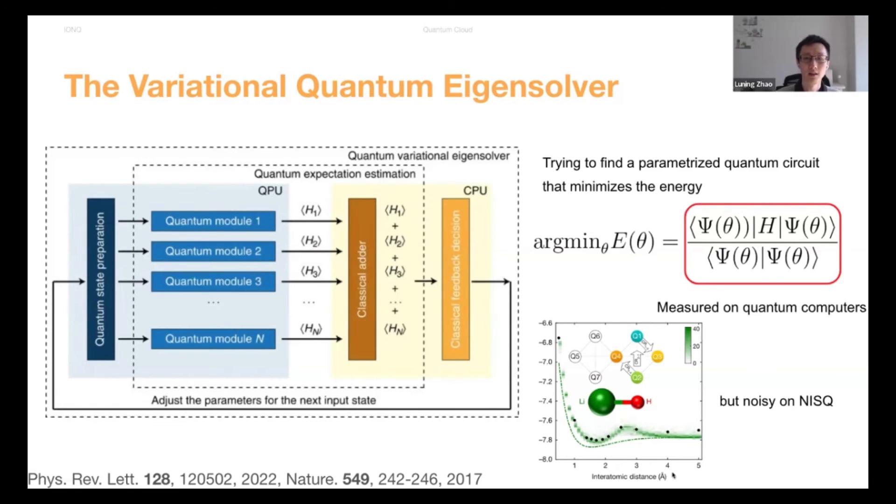But on NISQ systems, this variational quantum eigensolver doesn't work that well because of system noise. Here is an example that shows the bond dissociation, a potential energy surface for a lithium hydride molecule. You see that comparing with this exact solution, which is a dashed green line, the measurement energy on the quantum computer, which is shown by this black dot, are above the exact solution and also have some unphysical behaviors like this hump. So the energy is noisy on NISQ systems.